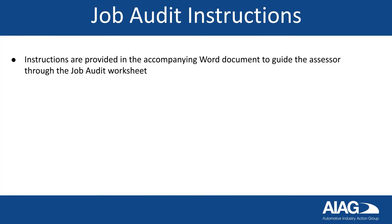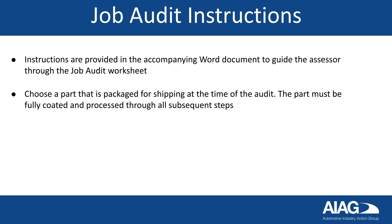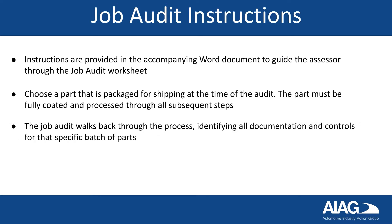Instructions are provided in the accompanying Word document to guide the assessor through the job audit worksheet. Choose a part that is packaged for shipping at the time of the audit. The part must be fully coded and processed through all subsequent steps. The job audit walks back through the process, identifying all documentation and controls for that specific batch of parts.